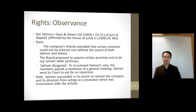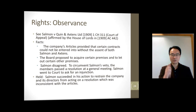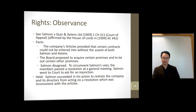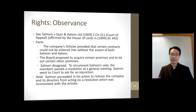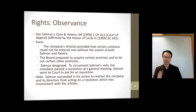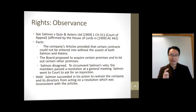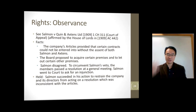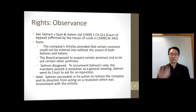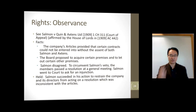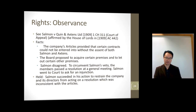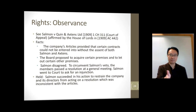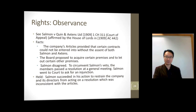In the case of Salmon and Quint and Extons, the company's articles said that certain contracts cannot be entered into without agreement of both Salmon and Extons. The board wanted to acquire and rent certain premises, and Salmon disagreed. The members tried to override him by passing a resolution, but Salmon said the articles require both parties' agreement. The court agreed — he could restrain the company. What they should have done was change the articles, but so long as the articles require his permission, they cannot override him.